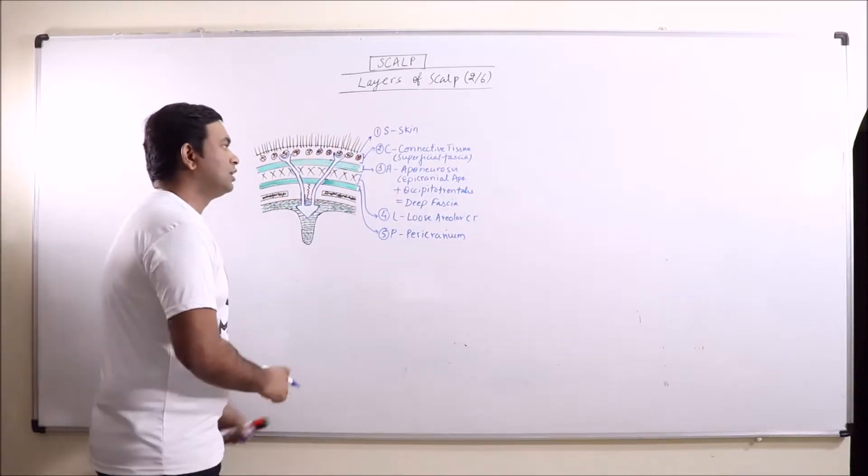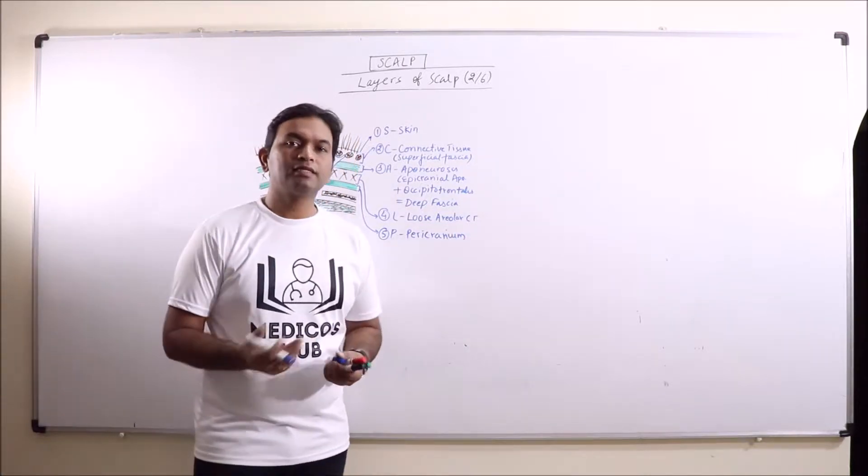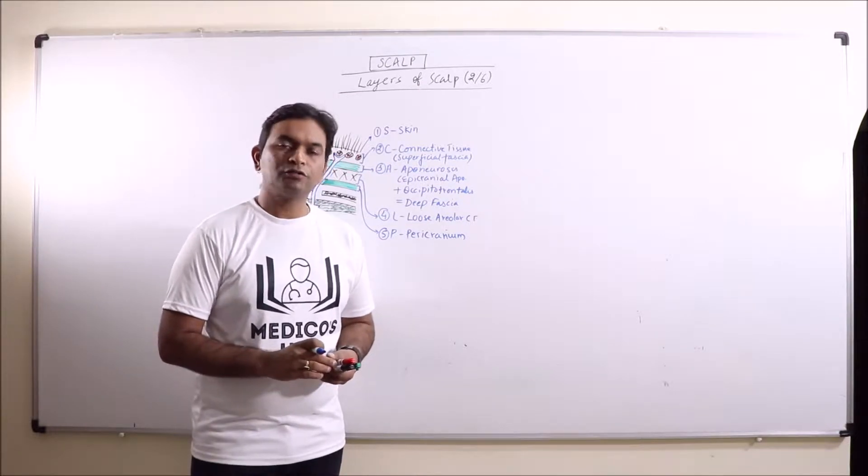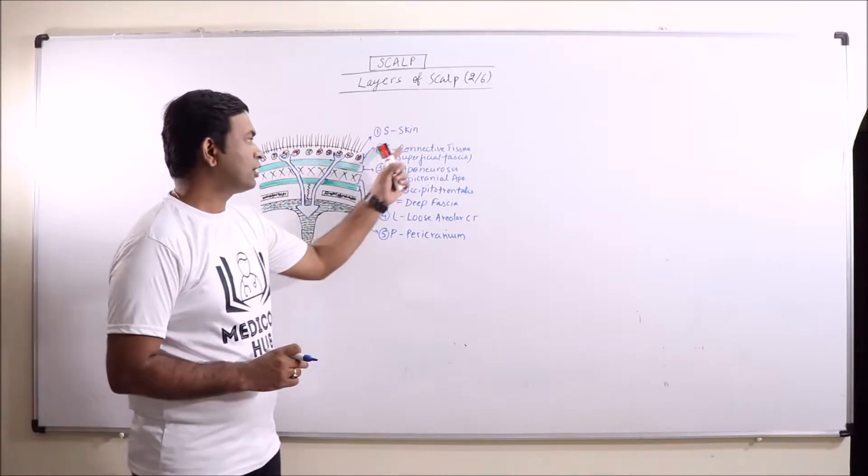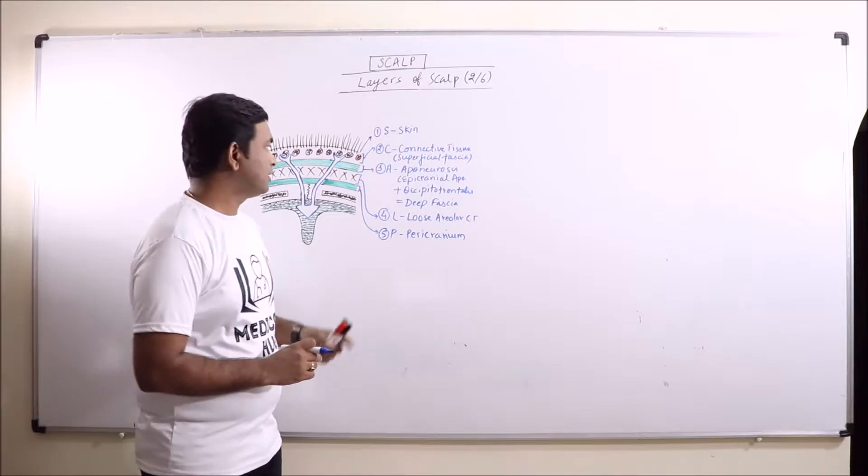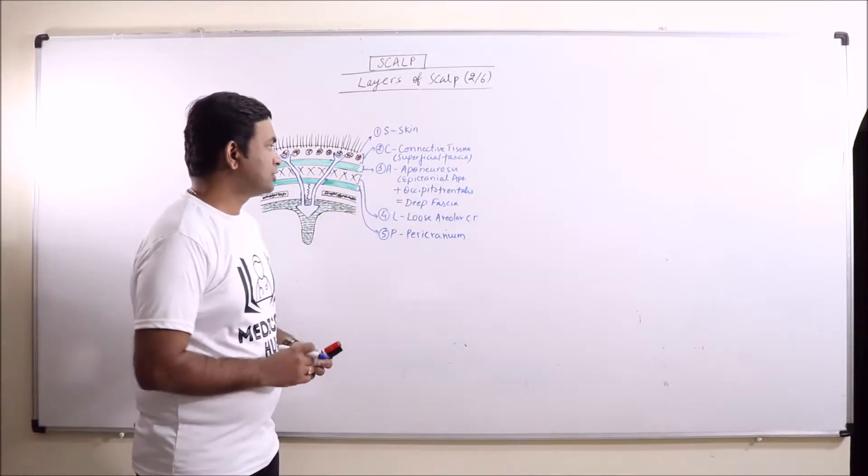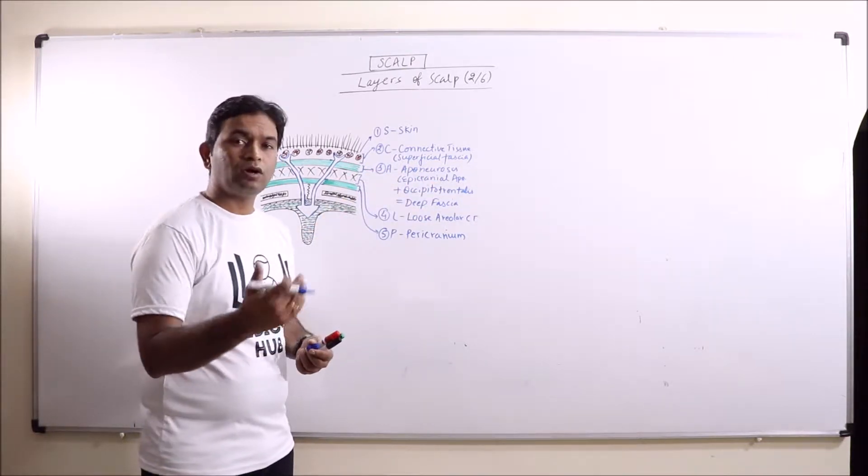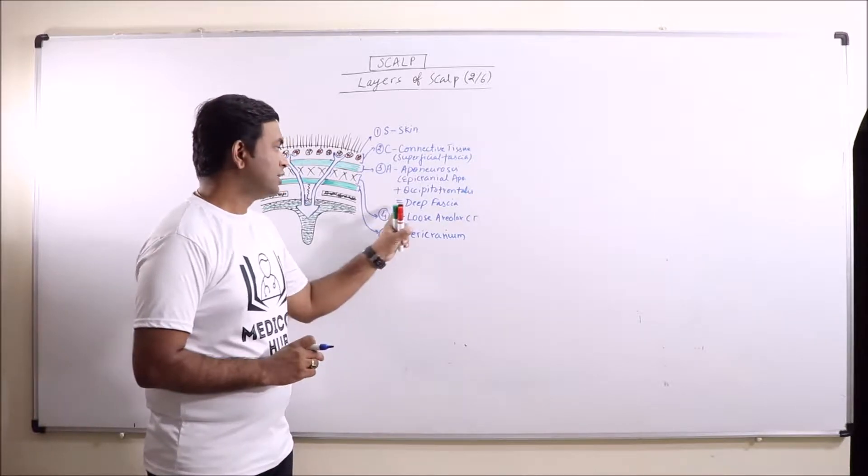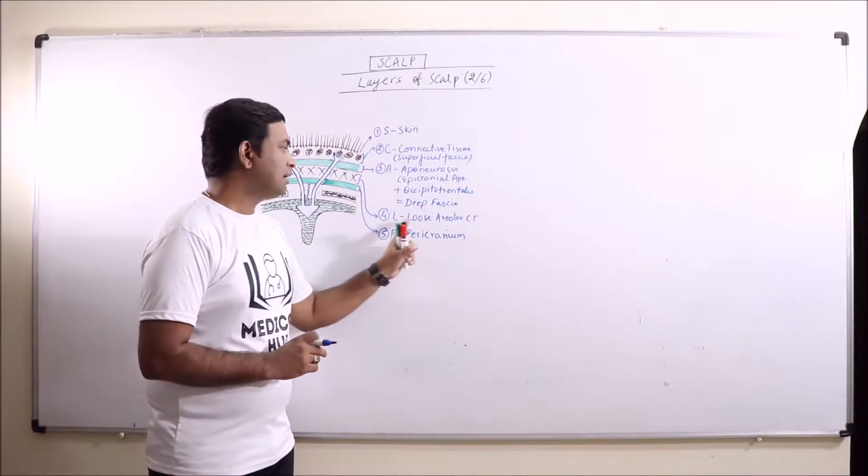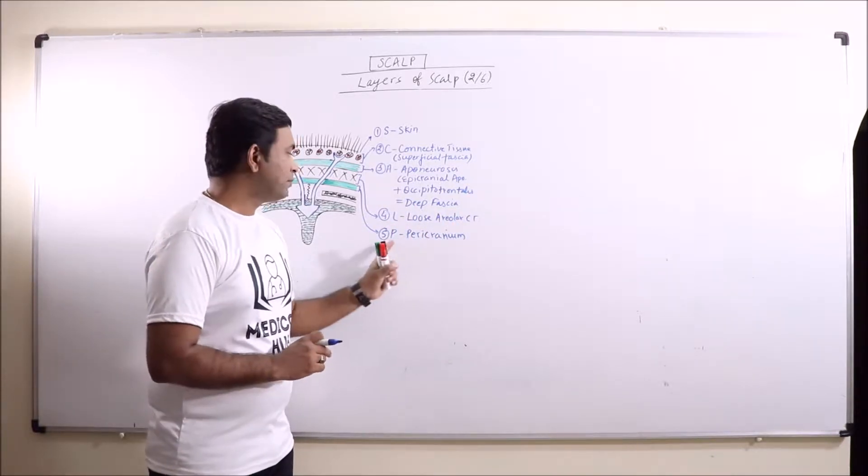So we can remember the layers of scalp as SCALP itself. S for skin, C for connective tissue which is superficial fascia, A for aponeurosis that is epicranial aponeurosis which along with occipitofrontalis muscle is known as deep fascia, and L for loose areolar connective tissue and P for pericranium.